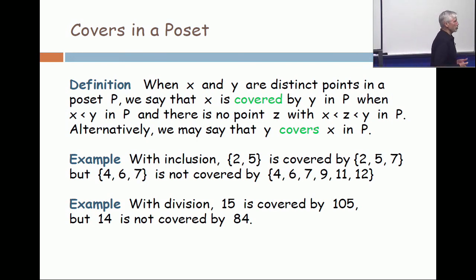The same thing when you say 17 is not less than 1 billion. You better add a qualifying phrase that says, when we're talking about the poset of positive integers under division without remainder. Make sense? Okay, good.